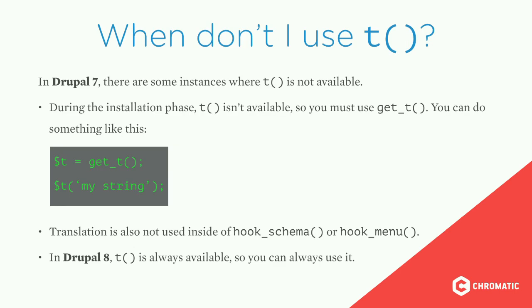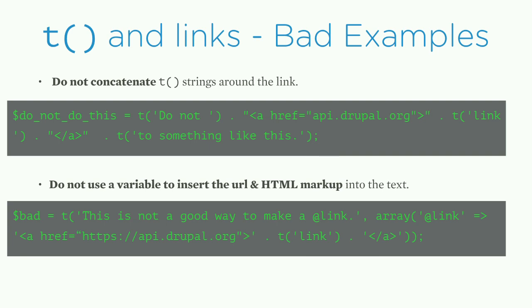When don't you use the T function? In Drupal 7, during the installation phase T isn't available, so you have to use the get_t() function — set a variable to get_t and then wrap a string in that. Translation is also not used inside hook_schema or hook_menu. But in Drupal 8, T is available all the time. Now I'm going to show some bad examples of using T and links, because this is one of the places where people get most confused.